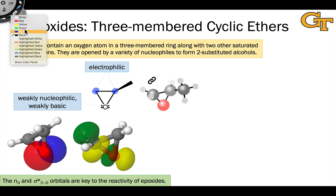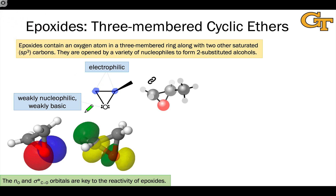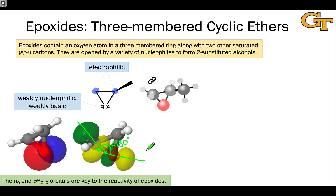The sigma star C–O orbital is actually bent. If you look at the axis of the hybrid from the carbon, it runs in one direction, but the axis from the hybrid on oxygen is not parallel — they form an angle that's less than 180 degrees. This leads to relatively poor overlap between the hybrids and a relatively low energy for this unfilled orbital, making it more reactive than the C–O anti-bonding orbital in a typical ether.